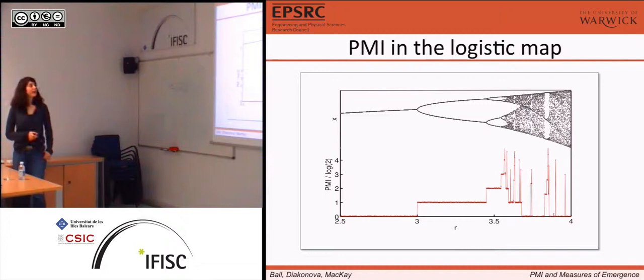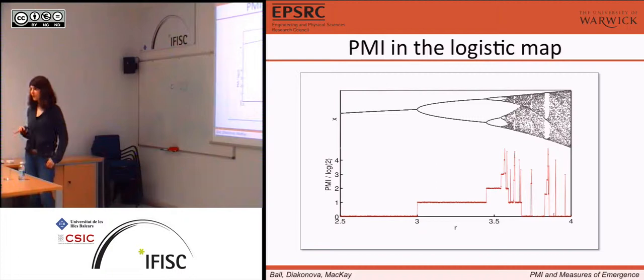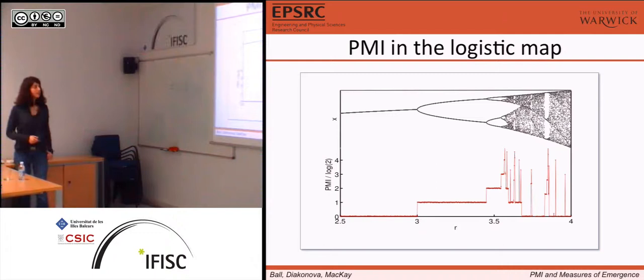We can see a period three. What is measured here is the mutual information between a distribution that is flat over the attractor of the logistic map and its evolved counterpart separated by a time gap — it's some difficult time gap, it doesn't come into it. Essentially, it's how much the past knows about the future, to put it very loosely.